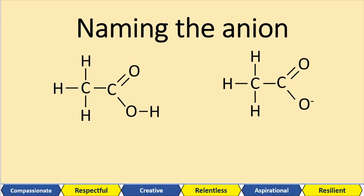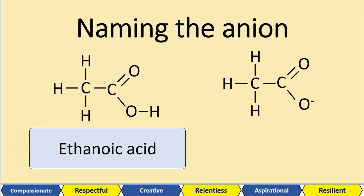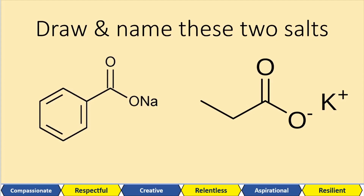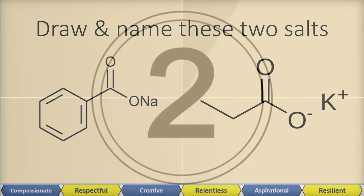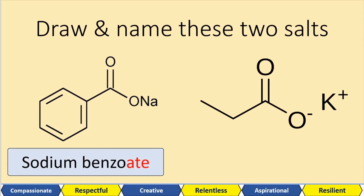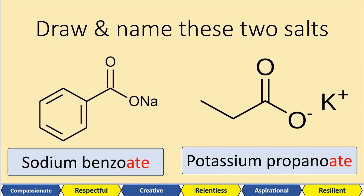Now let's name the anion of the acids. On the left-hand side we've got ethanoic acid. Carboxylic acids form carboxylate ions — so ethanoic acid forms an ethanoate ion. Now draw both chemicals and name the salts. The first part of the name is the metal — sodium — and we end with benzoate: sodium benzoate. The second one: one, two, three carbons, our metal is potassium — that gives us potassium propanoate.